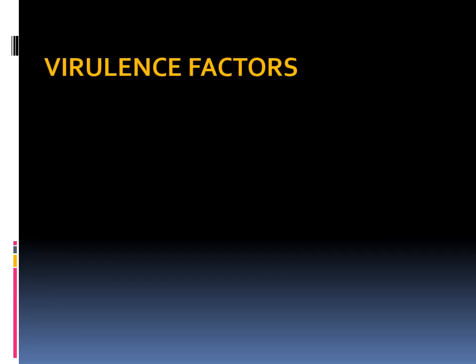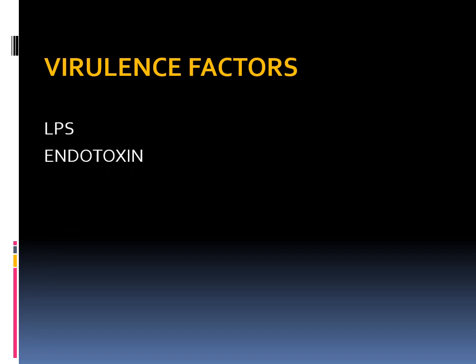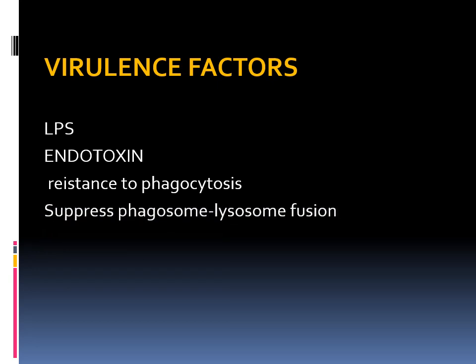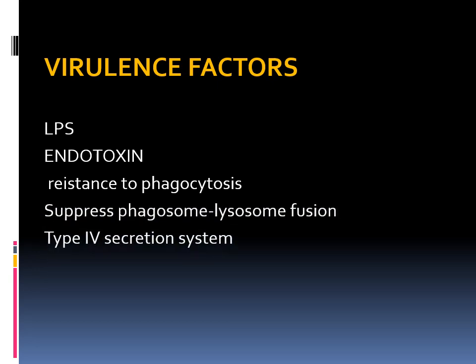The virulence factors of Brucella include lipopolysaccharides and endotoxins. These provide resistance to phagocytosis, suppress phagosome-lysosome fusion, and the organism also has a type 4 secretion system.